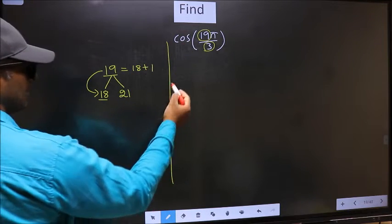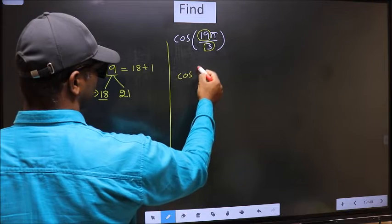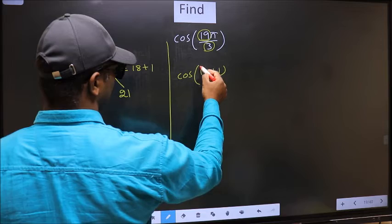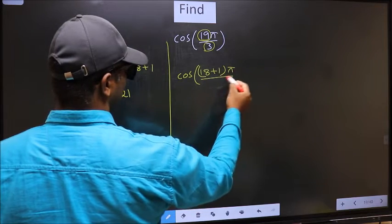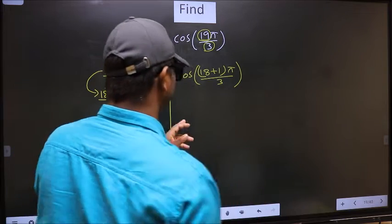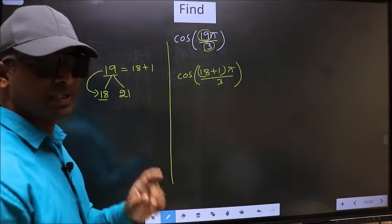So this will become cos. In place of 19, now you write 18 plus 1, π by 3. This is your step 1.